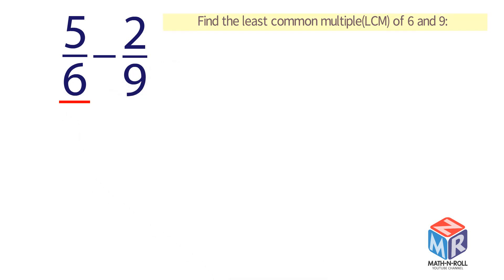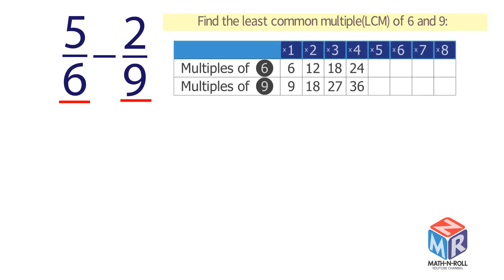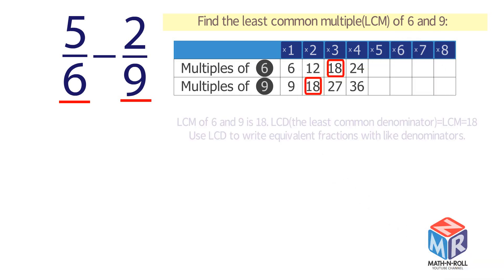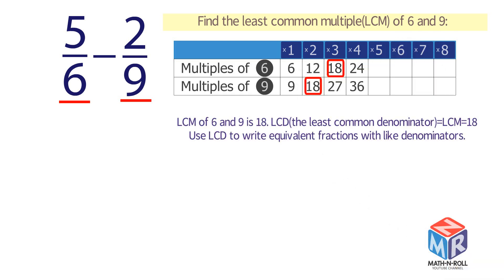Find the least common multiple of 6 and 9. The multiples of 6 are 6, 12, and so on. The multiples of 9 are 9, 18, and so on. Find the smallest number that appears in both lists. The least common multiple of 6 and 9 is 18. The least common denominator is equal to the least common multiple, which is equal to 18.